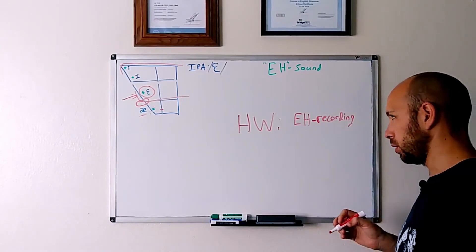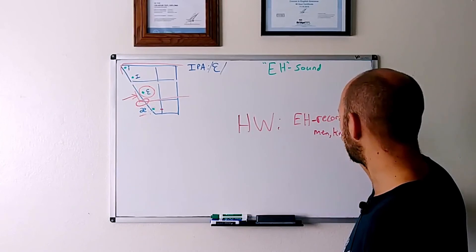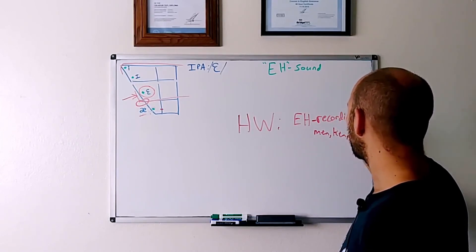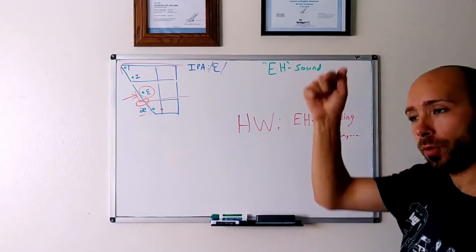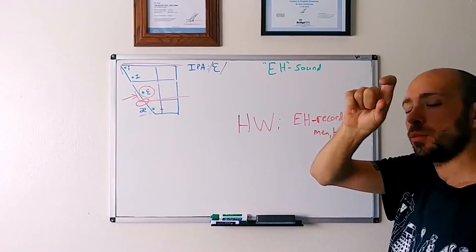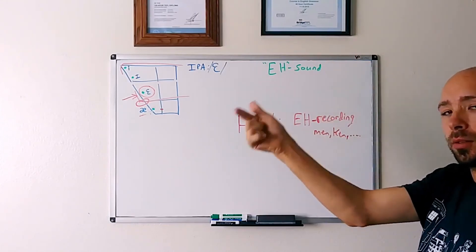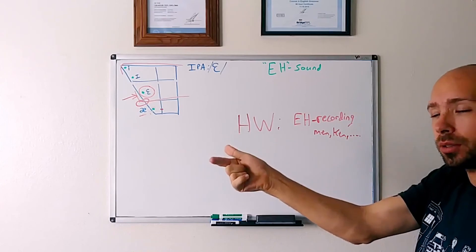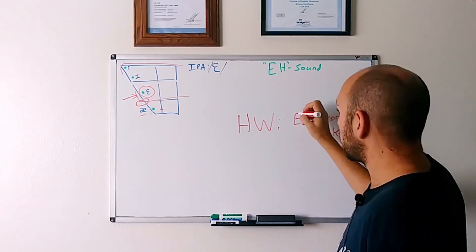So the EH recording, which will start, I believe it starts with men, ken, etc. Again, that's going to be in the vowel folder. If you follow the link in the description below, you'll see basic sounds. And then inside that is a folder called vowels. And you will find this recording. That's number one.